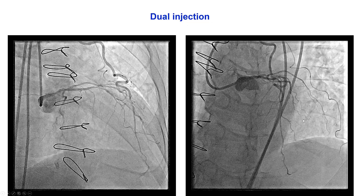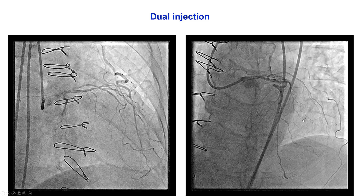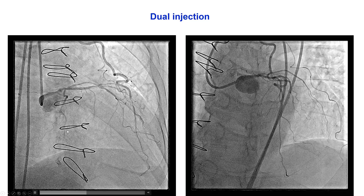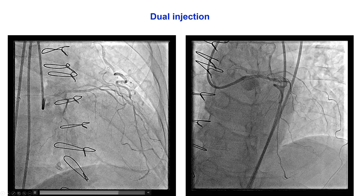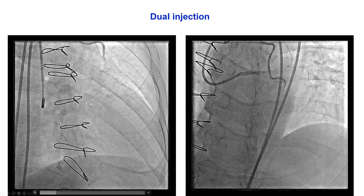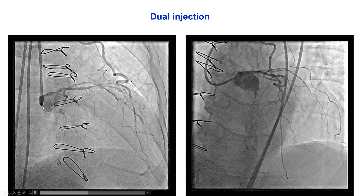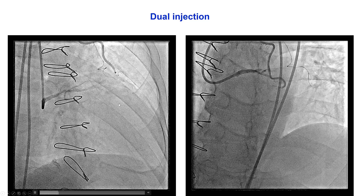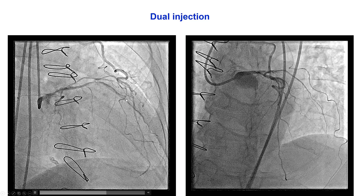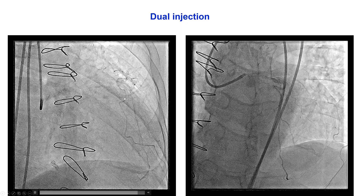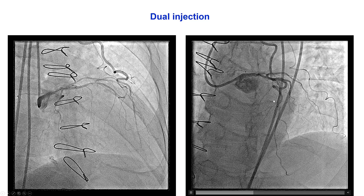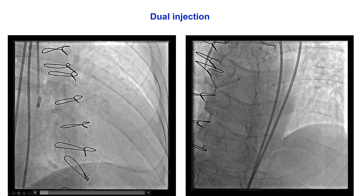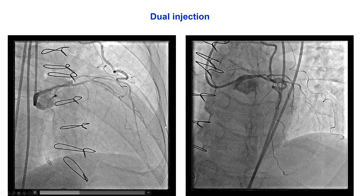We started with a bifemoral approach. We knew this was going to be a challenging lesion to treat, whether we treated the LIMA anastomotic lesion or the native CTO. We engaged the IMA with a 7 French IMA guide and the left main with an EBU 3.75 guide. On dual injection, we can see tenting of the vessel, which makes it quite challenging to understand the course of the vessel. This is common with bypass grafts — they tent the native vessels and can make it difficult to recanalize the native coronaries.